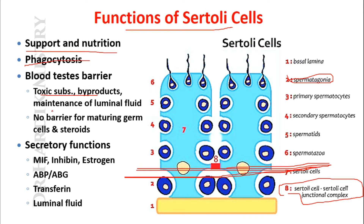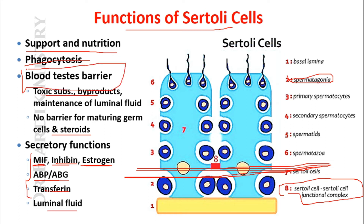Sertoli cells maintain the luminal fluid so that nutrition and materials cannot escape out of the seminiferous tubule. There is no barrier for maturing germ cells and steroids, so steroid hormones can cross easily via the blood-testis barrier. The Sertoli cell secretes MIF (Mullerian inhibitory factor), inhibin, estrogen, androgen-binding protein (androgen-binding globulin), transferrin, and luminal fluid. Forming the blood-testis barrier is the most important function. Due to this barrier, sperms cannot enter blood circulation, even though sperms are antigenic to the male body.